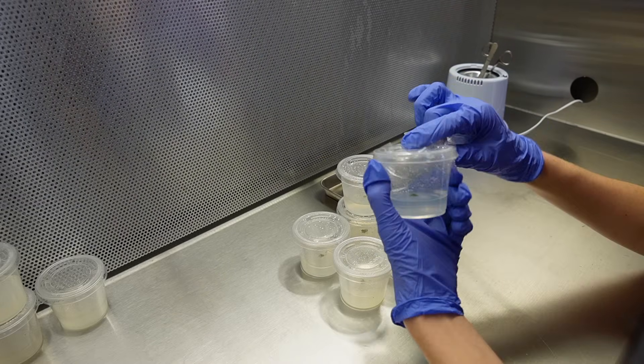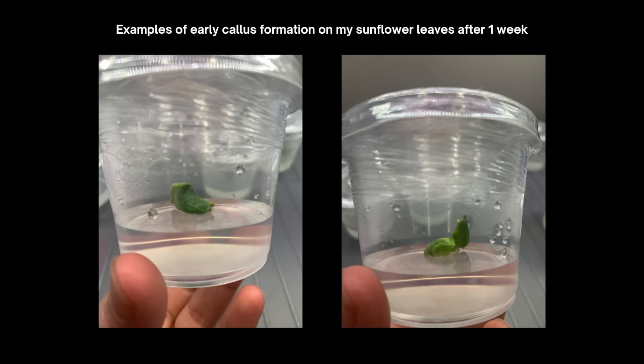After a few weeks, we should start to see some callus growth on these samples and from the callus, you will see young baby plants start to form and grow. You can keep subculturing the callus over and over to make more and more plants, and that's how you would potentially end up with 100 or even a thousand plants from one seed.